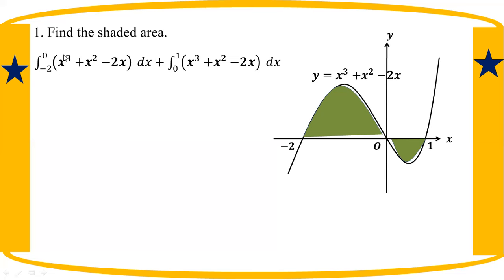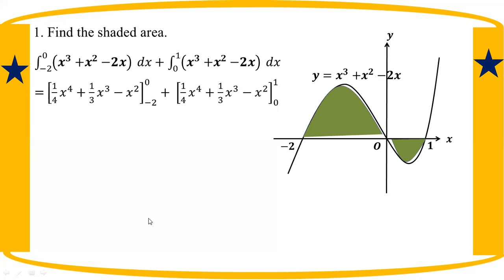A² goes into 1 by 4, a power 4. Plus, a² goes into 1 by 3, a³. Minus 2a² goes into 1 by 2, a². So we have: 1 by 4 a⁴ plus 1 by 3 a³ minus a².